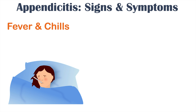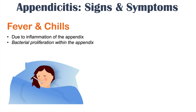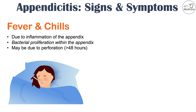Patients with appendicitis can also have fever and chills, due to inflammation of the appendix and more specifically bacterial proliferation within it. It may also be due to perforation of the appendix. If appendicitis goes on too long and the appendix becomes more enlarged and inflamed, it is at risk for rupturing — usually after 48 hours of onset. A rupture causes spilling of bacteria and fecal contents, leading to infection.